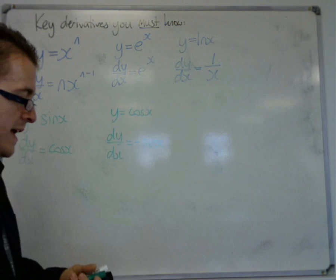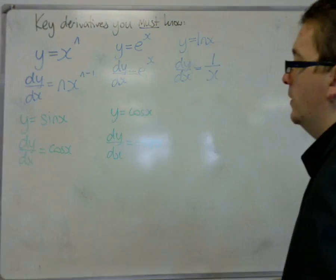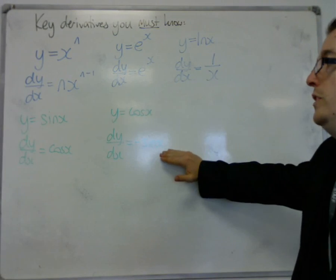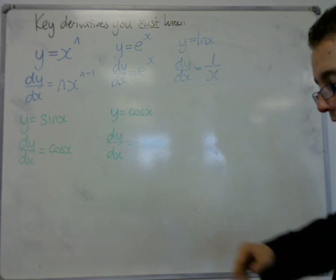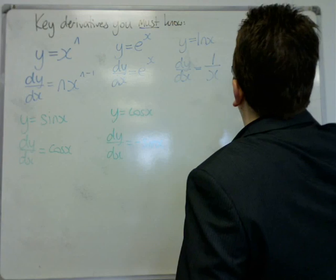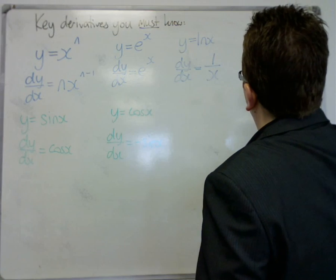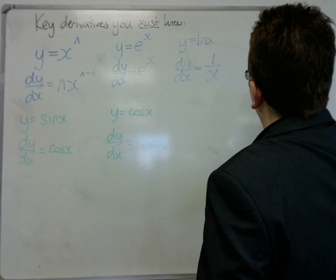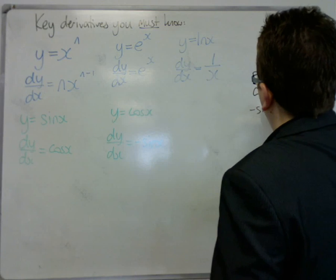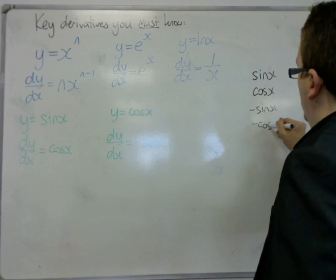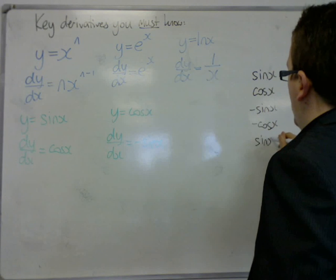So there is a pattern to this because then minus sin x would differentiate to minus cos x. So there is a cycle for the trigs, for sin and cos x, that you need to be aware of.